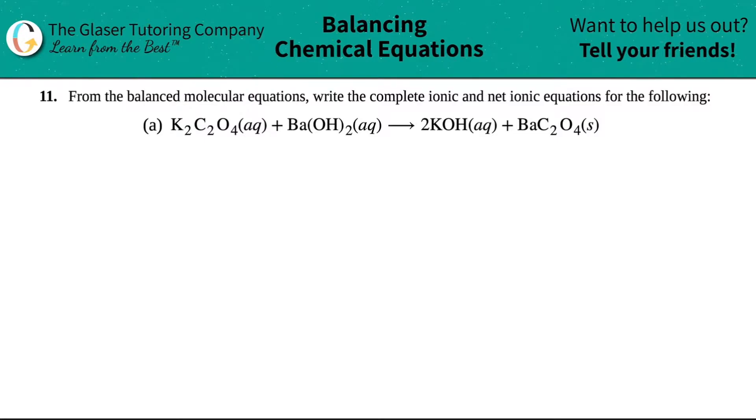Number 11. From the balanced molecular equations, write the complete ionic and the net ionic equations for the following. Then we have letter A out of the bunch. So this equation is K2C2O4 aqueous plus Ba(OH)2 aqueous, which will yield or produce 2KOH aqueous and then BaC2O4 solid.